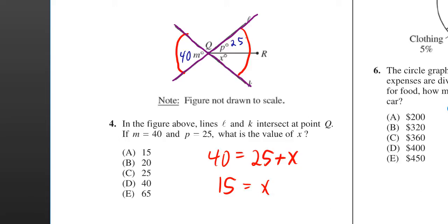I've already put in 40 for M and 25 for P. Here we can just use the fact that we have vertical angles, and vertical angles are equal. So that means the 40 is going to equal 25 plus X. To get the entire angle on the right, you need to do 25 plus X.